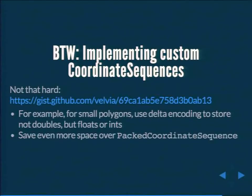There's a GitHub gist available if you want to explore memory efficiency further. You can implement a custom coordinate sequence — for example, storing coordinates as floats instead of doubles for small geometries like city police district boundaries, since the delta between subsequent coordinates is very small. We're at a point where things are efficient enough that we probably won't pursue this further, but there are cases where it could help.